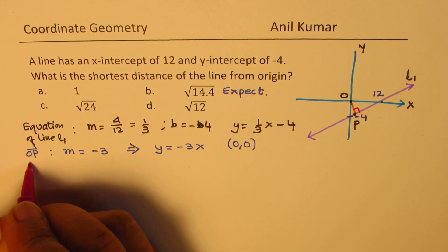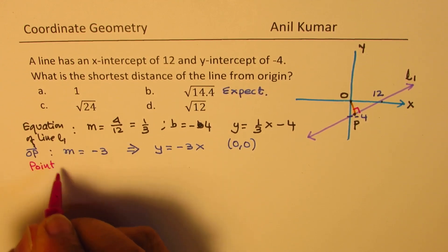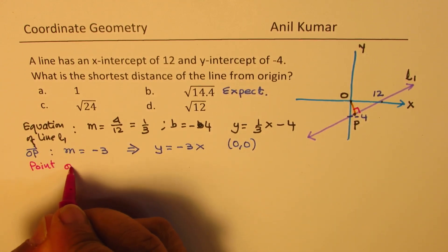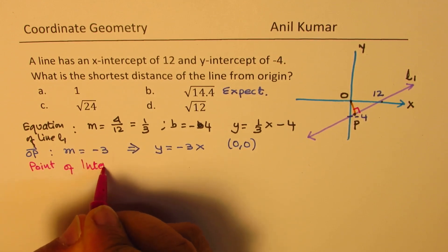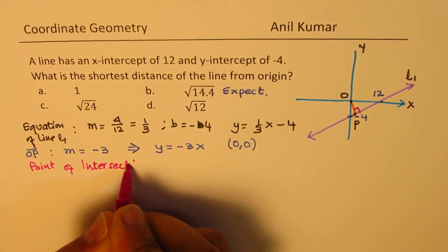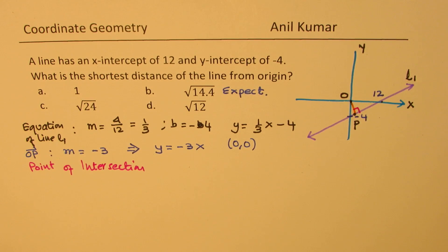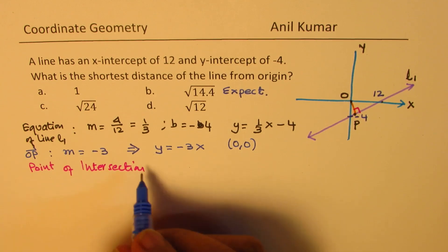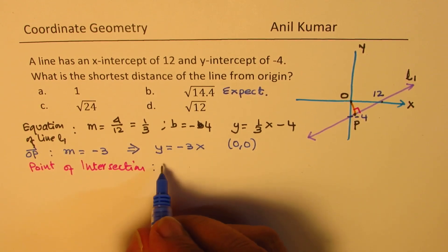So, to find the point of intersection, we could substitute and get the answer. Now, I hope you can always pause and solve and then check your solution with my answer. Point of intersection, we need between the two lines.